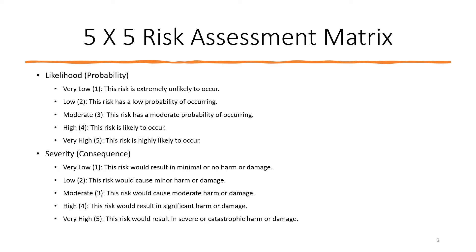Looking at severity and consequences: very low, low, moderate, high, and very high. At the very low end, consequences are minimal or no harm. When it gets up to very high, consequences are severe or catastrophic harm. This is where, basically, we don't want anybody killed — people don't like to see that in writing, so we use different words, but it means the same thing.